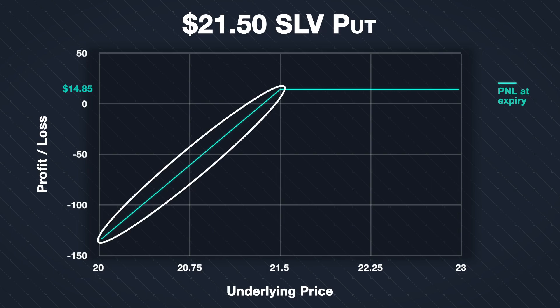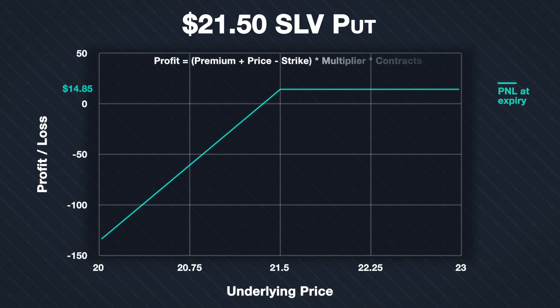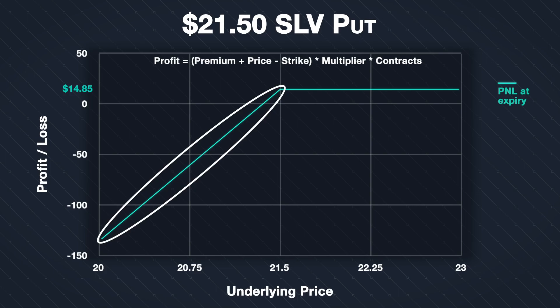If SLV is below the strike price of $21.50 at expiry, we calculate profit or loss using this formula: (premium + price at expiration − strike price) × contract multiplier × number of contracts. This is similar to the formula from lecture 5.3, except multiplied by negative one since we are the seller. Instead of just using the 16-cent premium, we use the total credit per share of $0.1485, which includes fees. The P&L line decreasing to the left of the strike price reflects this formula.